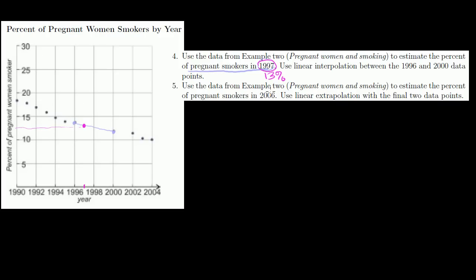Part five: estimate the percentage of pregnant smokers in 2006. Since the chart ends at 2004, we have to use linear extrapolation with the final two data points. This shows the difference between interpolation — estimating between two known data points — and extrapolation, where we take the final two points and continue that line beyond the data. Extending the line from 2004 to 2006, the percentage of women smoking looks to be a little under 10%, so maybe 9.5%. You could also extrapolate based on all of the data, which would give a slightly different line and predict a lower smoking rate — it depends on what data you use for your linear model.